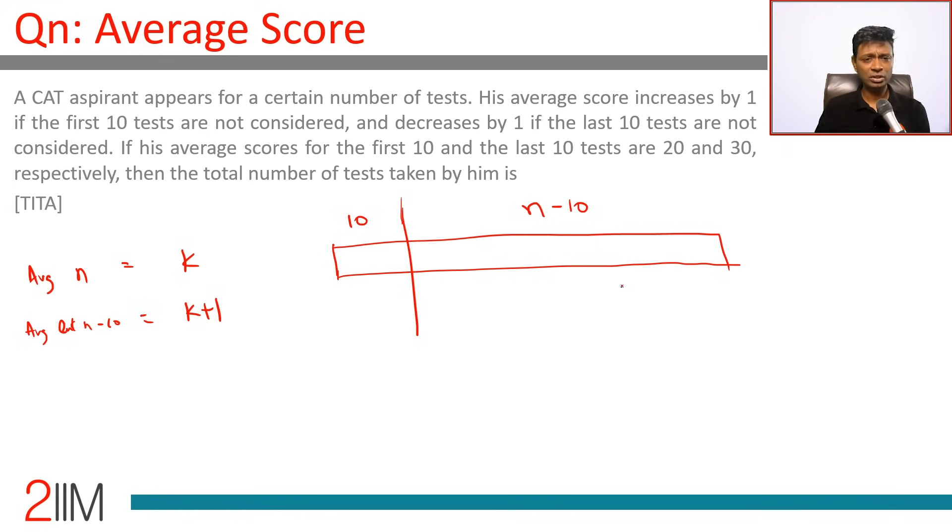And it decreases by 1 if the last 10 tests are not considered. So last 10 tests, 10 tests here, if these are not considered then the average is k minus 1, average of first n minus 10 is k minus 1.